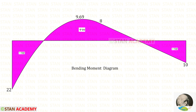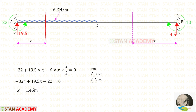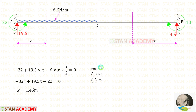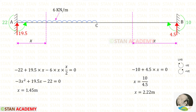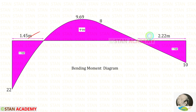Here you can see the bending moment diagram. At two points the bending moment becomes zero. We can make sections at these two points to find the distances. For the left-side zero point, the section is made at distance x from point A, and using the right-hand side rule we find x = 1.45 m. For the right-side zero point, the section is made at distance x from point B, and using the left-hand side rule we find x = 2.22 m.